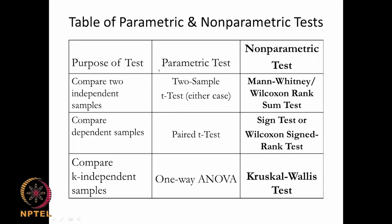Similar to each parametric test, there is a corresponding non-parametric test. If you are comparing two independent samples — where we used the 2-sample t-test — for non-parametric we use the Mann-Whitney or Wilcoxon rank sum test. If you are comparing dependent samples, meaning the paired t-test where the same subjects receive both placebo and drug or drug A and drug B, then the corresponding non-parametric test is the sign test or Wilcoxon signed rank test.